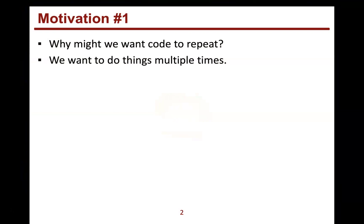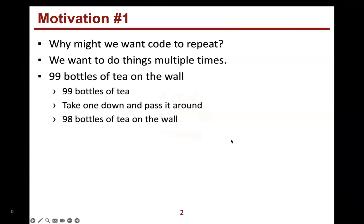Think about when there's times we want to do things many, many times and we want it to be really efficient. One idea that comes to mind is the song '99 Bottles of Root Beer on the Wall' — or you've changed it to tea: '99 bottles of tea on the wall, 99 bottles of tea. Take one down and pass it around, 98 bottles of tea on the wall.'